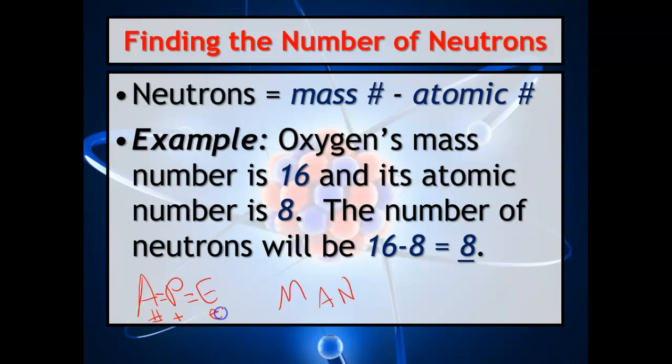A equals P equals E: atomic number equals your protons equals your electrons. Your mass, M-A-N: your mass number minus your atomic number equals your neutrons. APE MAN, and we'll talk about that more.